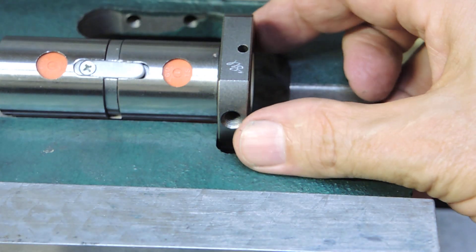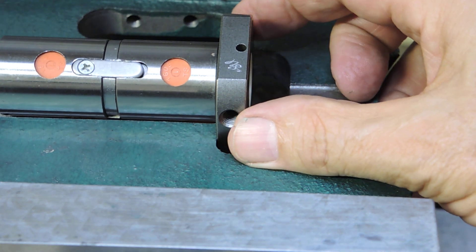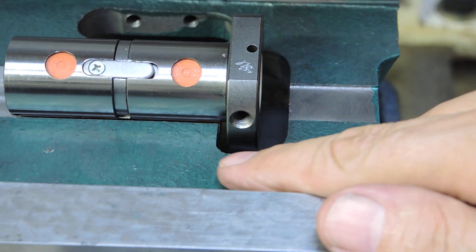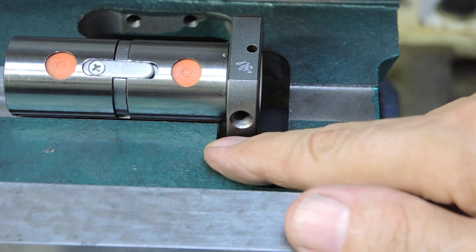Now when this sits in here, you have full contact across. If you don't straighten that out, sometimes it'll leave it sitting out a little bit and you only have contact right here in the corner.